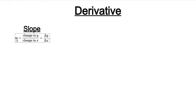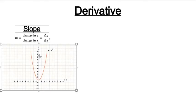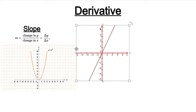The derivative is basically a slope. You all know what a slope is. Here we have the formula for slope: m is equal to change in y divided by change in x. Let's take the graph of x squared for example — or even better, we have the graph 2x right here.